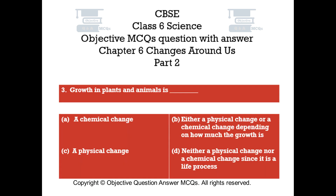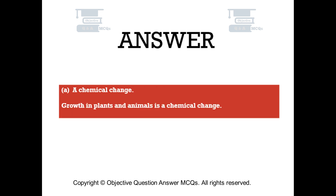Question number 3. Growth in plants and animals is — Option A: a chemical change. Option B: either a physical change or a chemical change, depending on how much the growth is. Option C: a physical change. Option D: neither a physical change nor a chemical change, since it is a life process. The right answer is Option A: a chemical change.